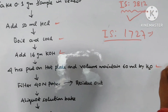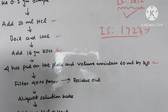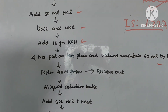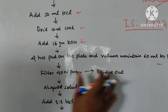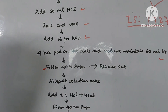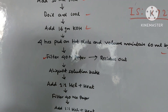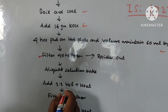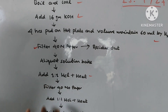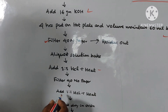Put on hot plate for 4 hours, and maintain the volume to 60 ml by adding water. After 4 hours on the hot plate, filter the solution. The resultant aqueous solution — bake it. Then add 1 to 1 HCl with some heat to that aqueous solution, and then filter again.